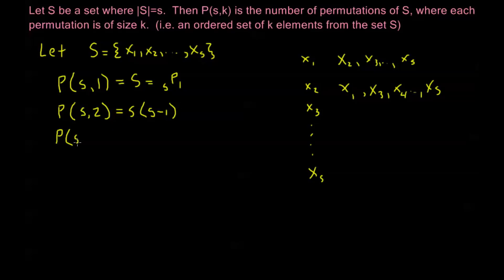well now all the permutations of size 3 are going to be all my permutations of size 2. And then for each of those permutations of size 2, I can put a third element at the end of it, and there are s minus 2 remaining elements that are not in any particular permutation of size 2. So it's going to be s times s minus 1 times s minus 2.